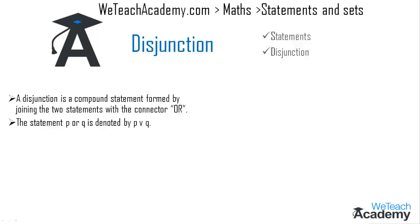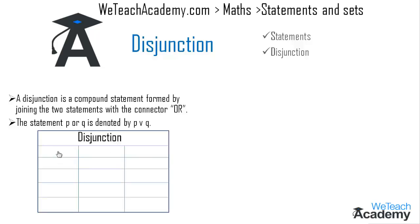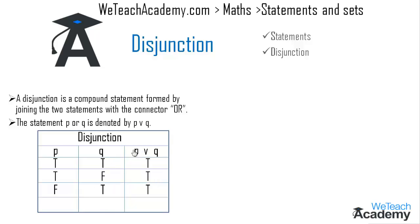We can also define disjunction with the help of a truth table. Here we have three columns: the first two columns give the truth value for P and Q, and the third column gives the truth value for P or Q. If both statements P and Q are true, then P or Q is true. If P is true and Q is false, then P or Q is true. If P is false and Q is true, then P or Q is true. If both P and Q are false, then P or Q is false.